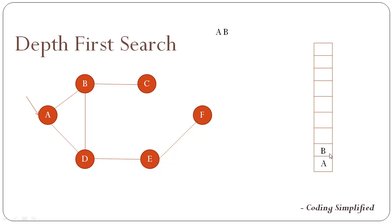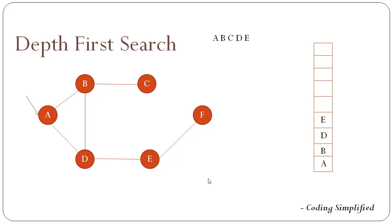Again we take the peek of the stack, which is B, and check for any unvisited neighbor. A is already visited, so we go to C — C comes first. We print C, mark it visited, and push C onto the stack. Now checking C, its only neighbor B is already visited, so it returns minus one, meaning we pop C out. We check B again: A and C are covered, so we push D. Then we peek D and push E since A and B are already covered.